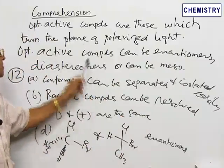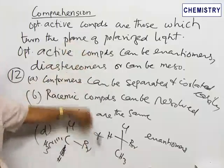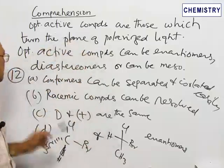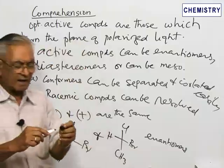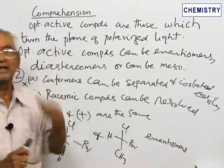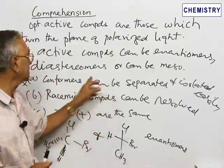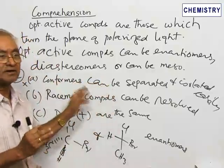It is not a correct statement because the purpose of the question is which one is a correct statement. A is not a correct statement because conformers have two different conformers. Every one degree there can be a conformer. Conformers means they are rotational isomers obtained by rotation.